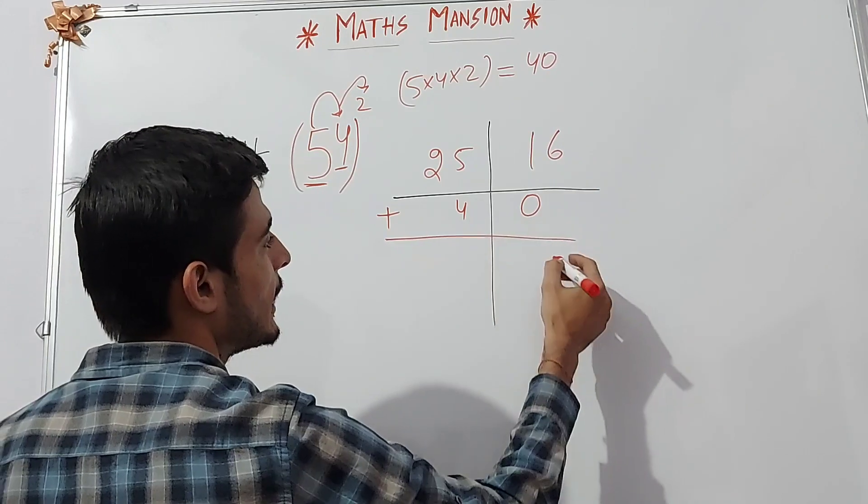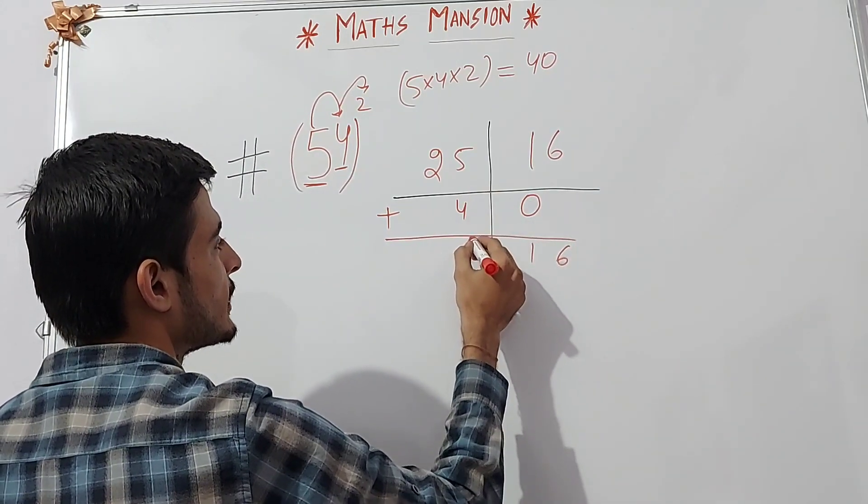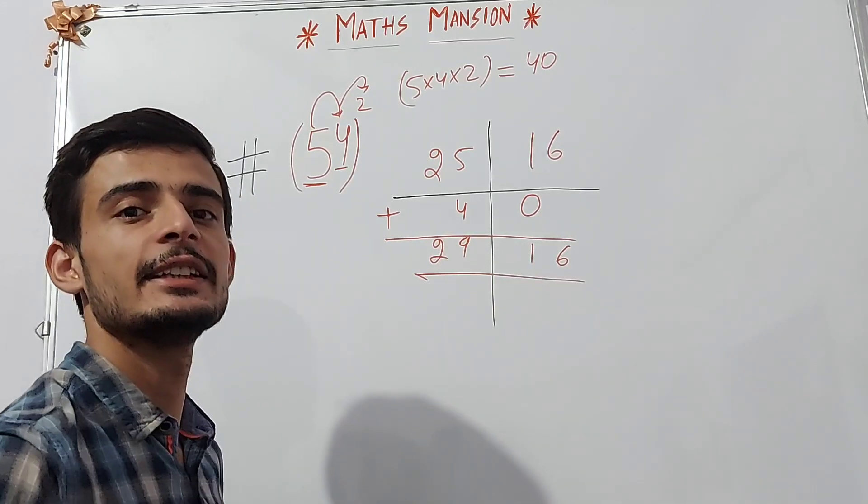Adding these we get 6 here. 1 plus 0 is 1. 5 plus 4 is 9 and 2 comes here. So 2916 is our answer.